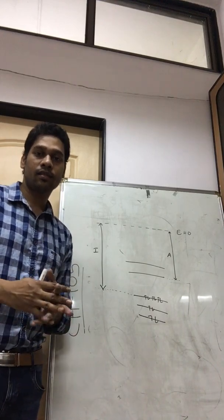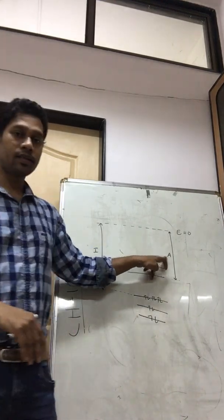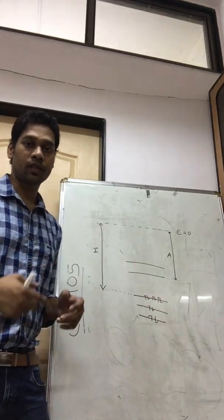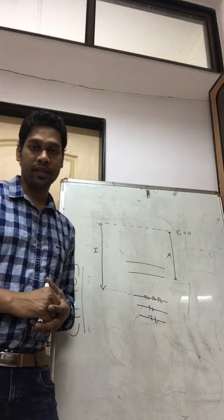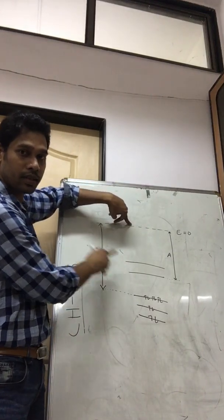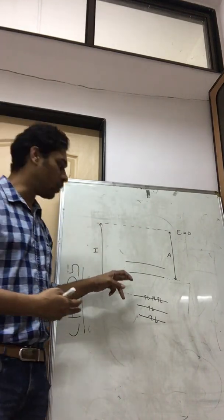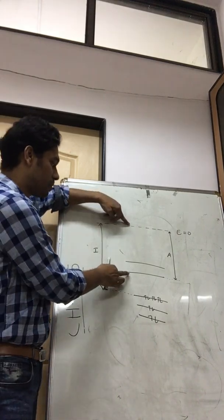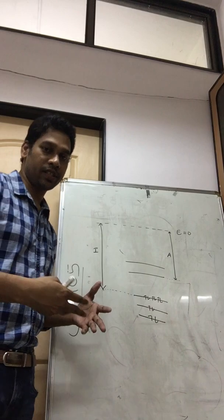Then what is electron affinity? Electron affinity is when you give an electron to your atom, how much energy it releases — that is called electron affinity. So the difference between here and here: this level is already filled, so the next electron can only go in this level. The energy difference between these two we call electron affinity.